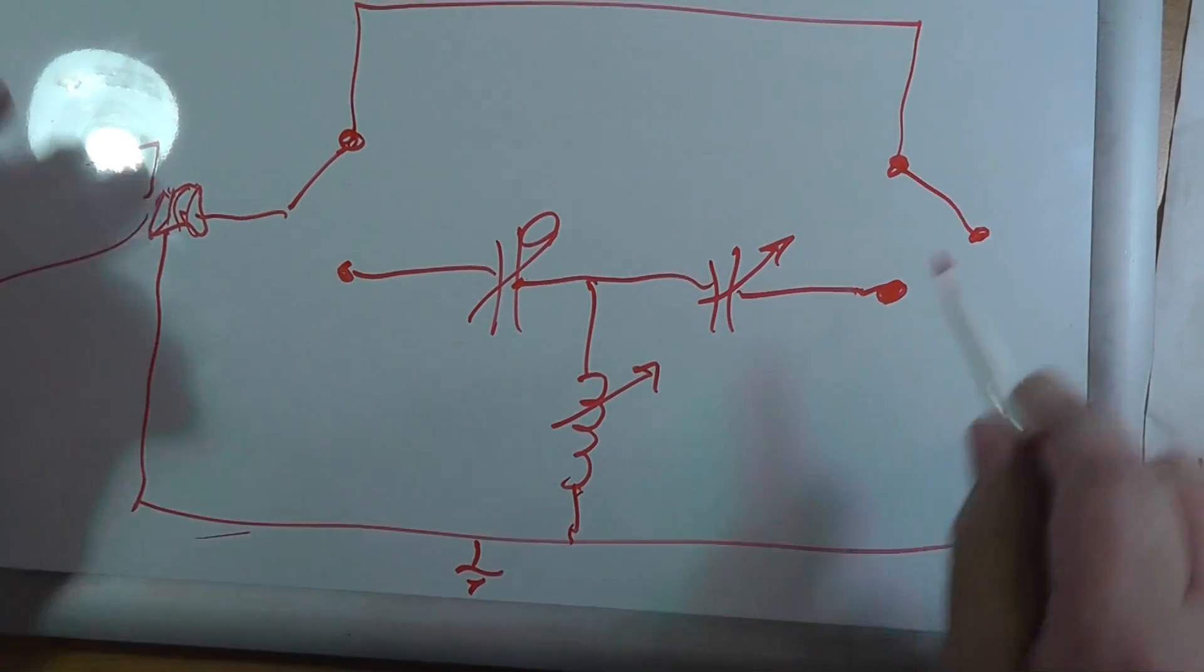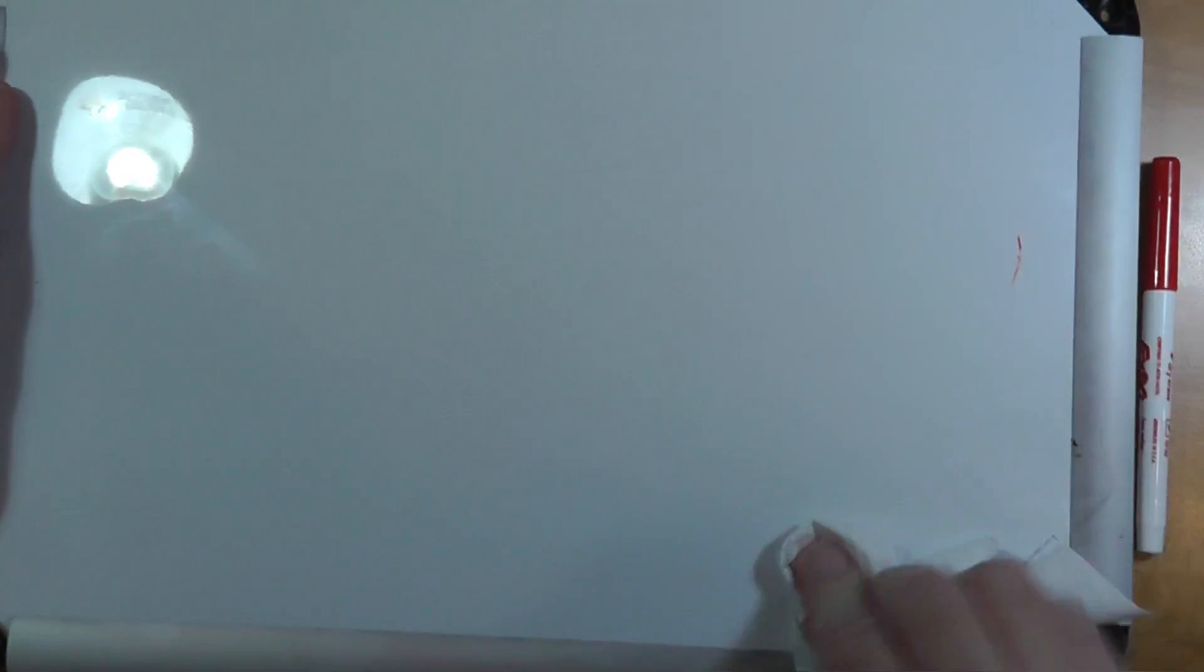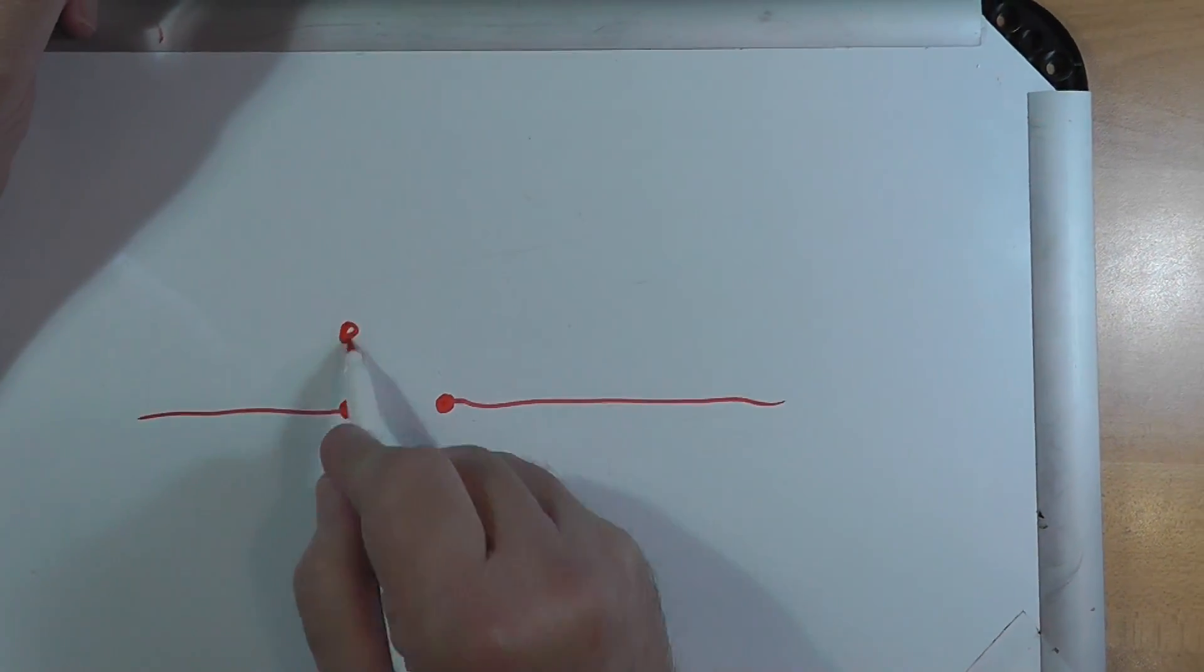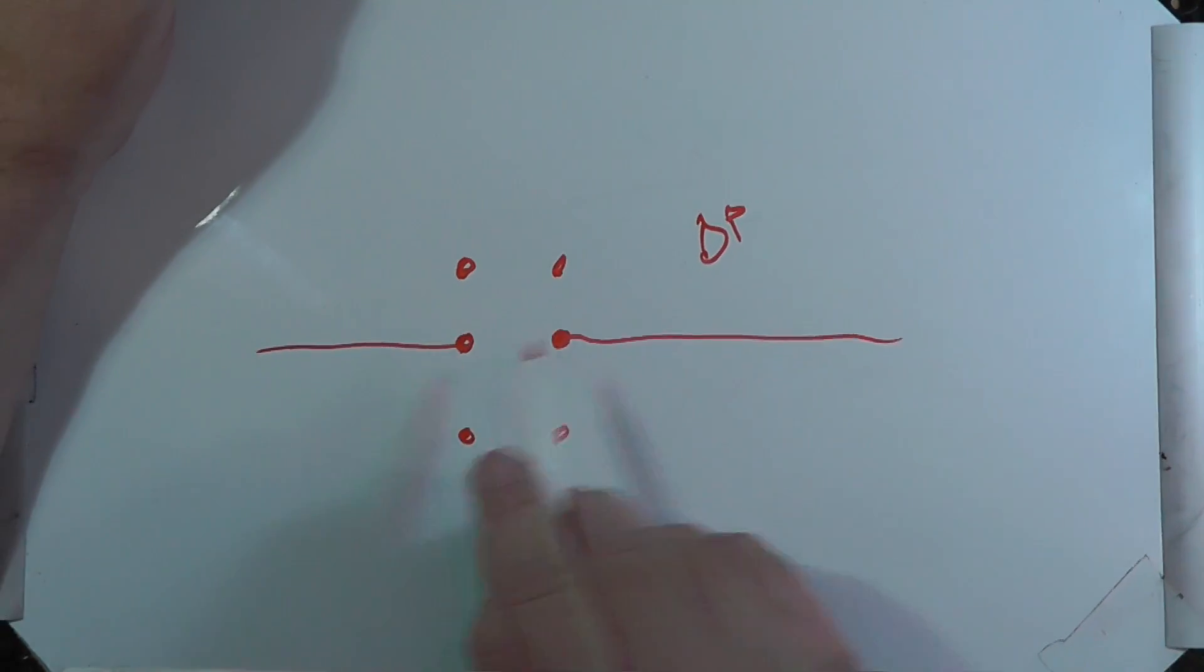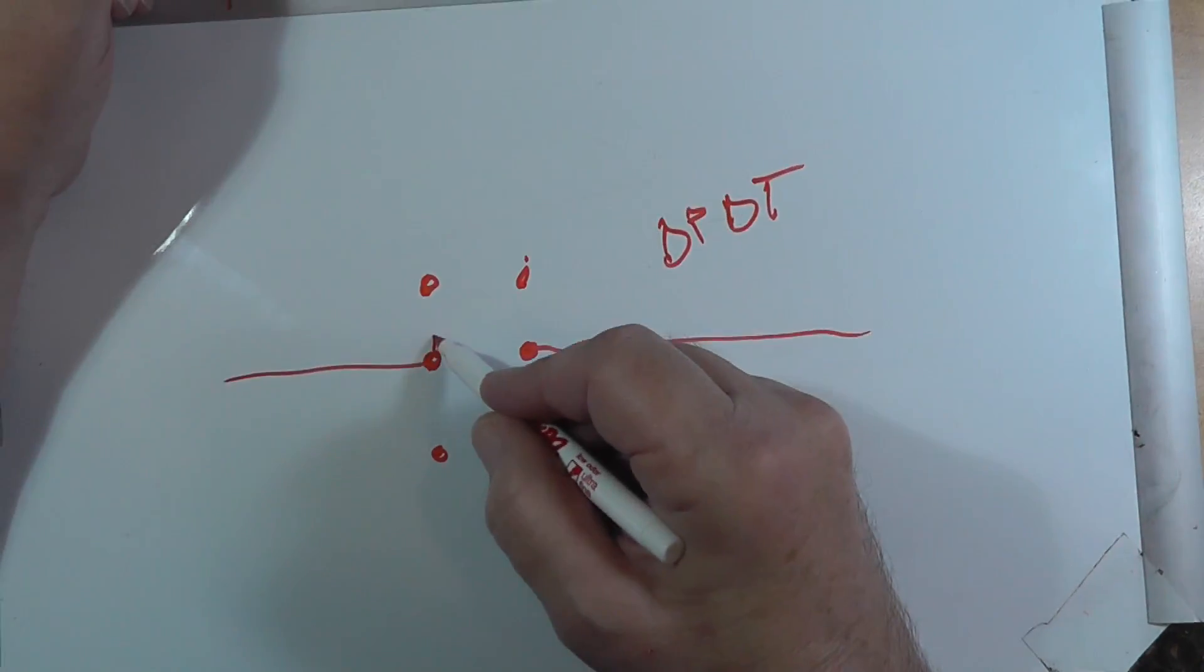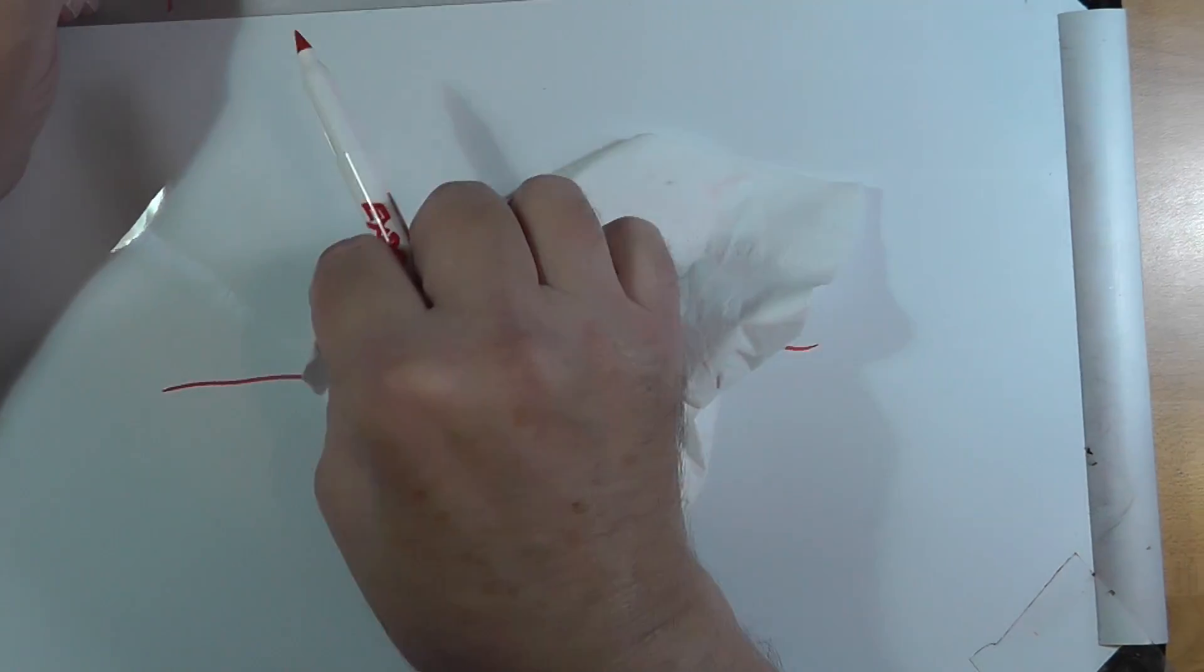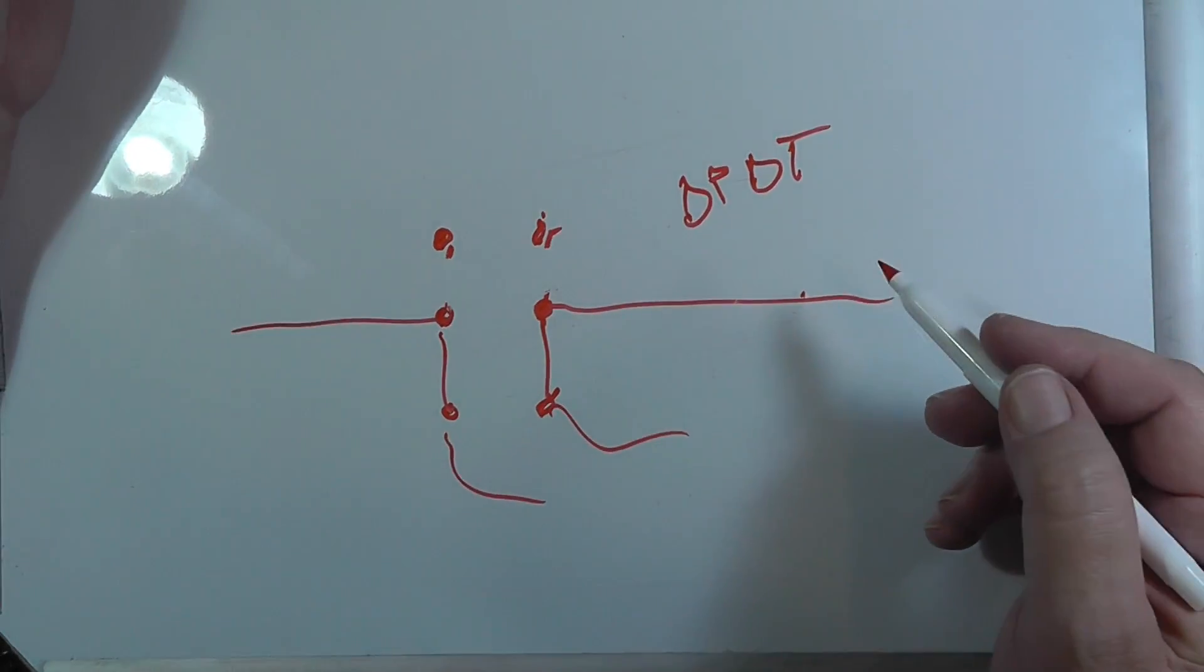Now, this again is a double pole, double throw. Let's take a look at a double pole, double throw switch. Here's the wire coming in and a wire coming in. And they have points here and points here. This is double pole because there's two sides to it. And it's double throw, meaning it has two positions. So, the positions can go this way, in which case these are connected to the input, or they go this way, so that they're connected to this output. Now, can the naming convention extend? Of course, it can.